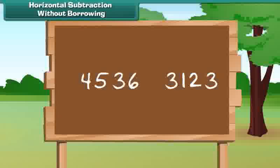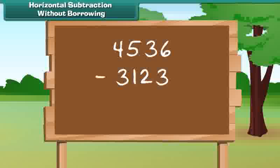We write the bigger number above and the smaller number below it. Now subtract the numbers at ones place, the tens, next hundreds, and at last thousands. Thus, the answer obtained is 1413.